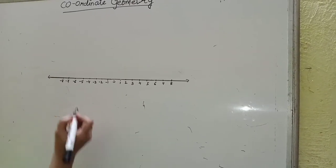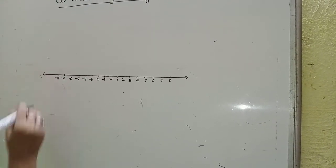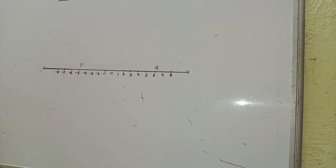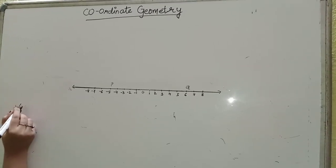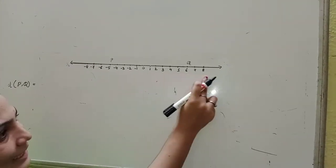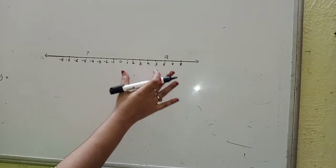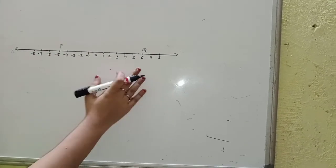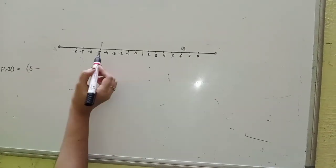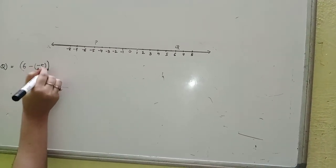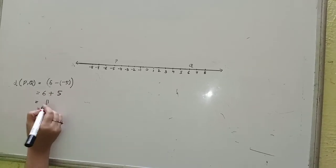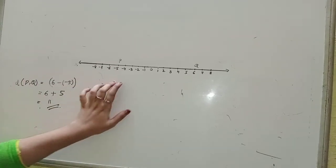As we all know, in the 9th standard we take the x-axis, with point P and point Q on it. If we want to find out the distance between P and Q, the right-hand side has positive numbers, and a positive number is always bigger than a negative number. So, the positive number is 6 and the negative number is minus 5. That gives us 6 minus (minus 5), which is 6 plus 5 equals 11. So the distance between P and Q is 11.